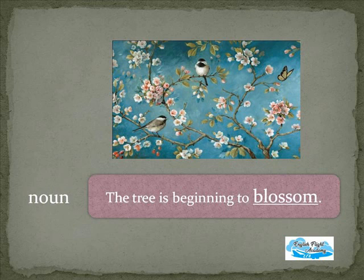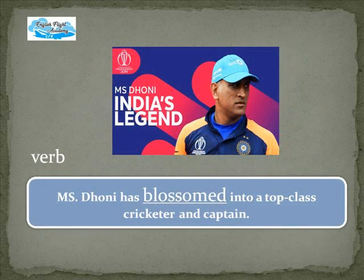Blossom as a noun: 'The tree is beginning to blossom' — meaning a mass of flowers are appearing on the tree. You can see the picture to learn the meaning quickly. Blossom as a verb: 'MS Dhoni has blossomed into a top-class cricketer and captain' — meaning he has developed into one.